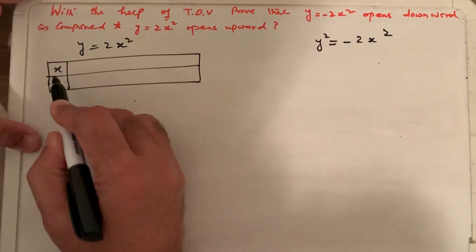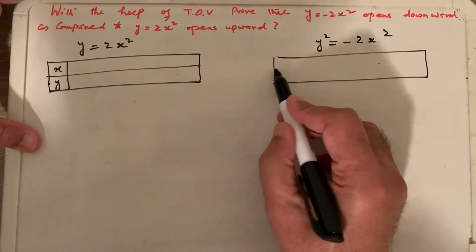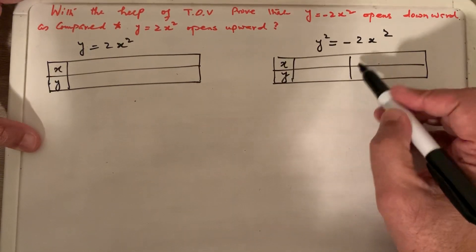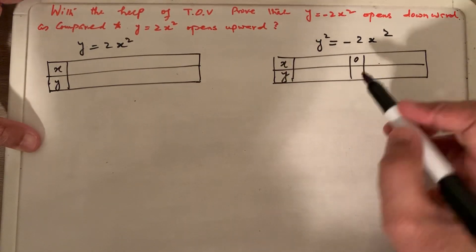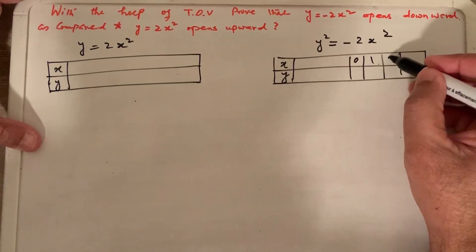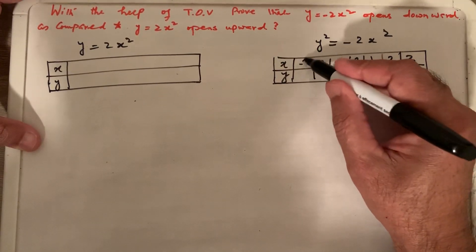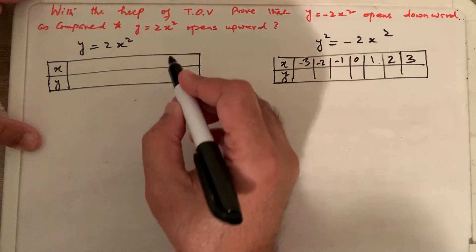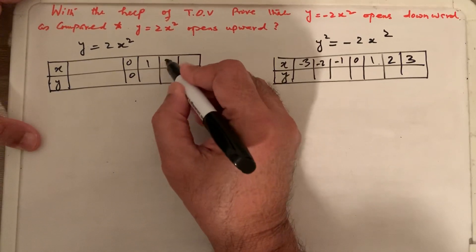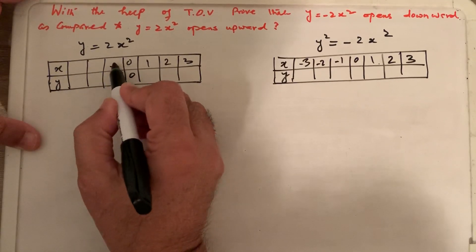We will create x and y values, which is called a table of values. We give values to x and calculate y. In the middle we put 0, then three values 1, 2, 3, and three negative values: minus 1, minus 2, minus 3. So the center value is 0,0, then 1, 2, 3 on the positive side and negative 1, negative 2, negative 3 on the negative side.